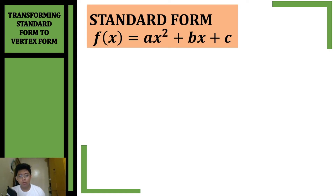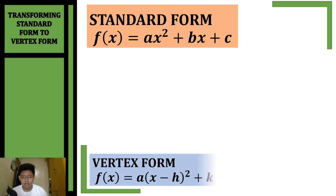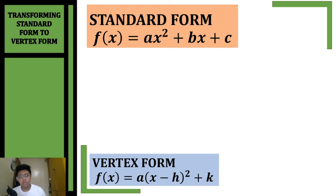We have a standard form of f(x) = ax² + bx + c, and we are going to convert it to the vertex form, which is a times the square of the quantity (x - h).